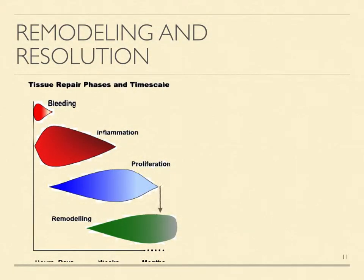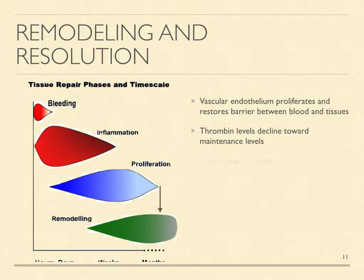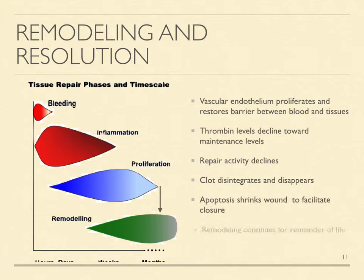The final phase of tissue repair is remodeling. As the vascular endothelium proliferates and restores the barrier between flowing blood and the damaged tissues, thrombin levels gradually decline, progressively reducing repair activity until thrombin levels fall below a critical threshold, whereupon the clot disintegrates and disappears, and repair cells begin to undergo apoptosis that shrinks the healing tissues and draws wound edges together to complete the repair process. Thrombin generation returns to maintenance levels, but the remodeling process continues for the remainder of life, and the damaged tissues never completely return to normal.